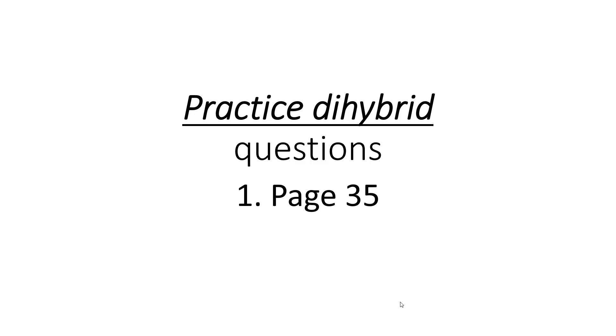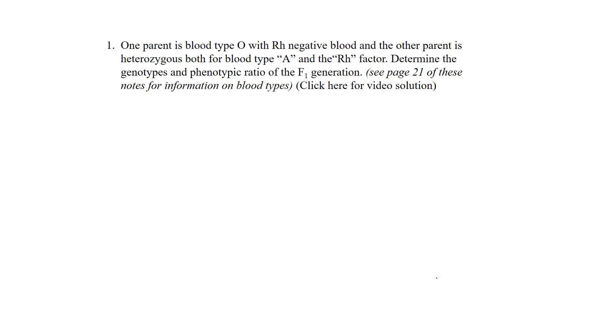Dihybrids are a little bit different, especially how we determine our gametes, but we'll go through the question and give a demonstration of that. This is question number one on blood typing. Lots of blood typing on there. It says one of the parents is blood type O with RH negative. Before we get into that, let's take a look at the standard legend.